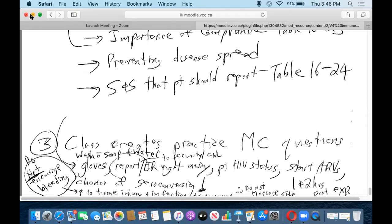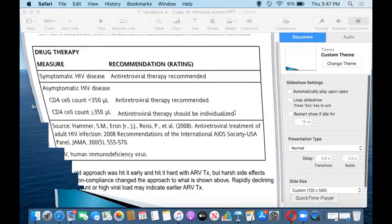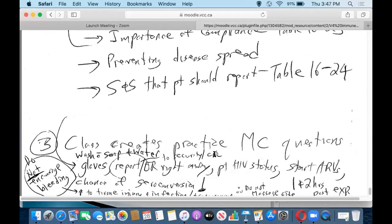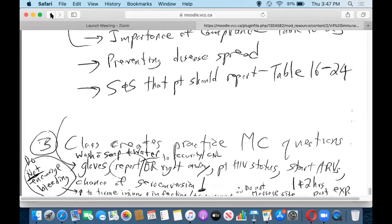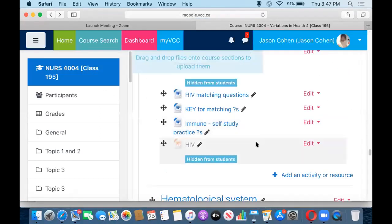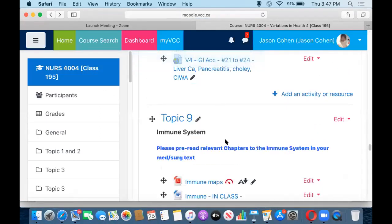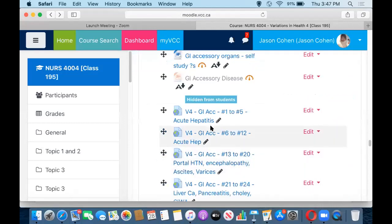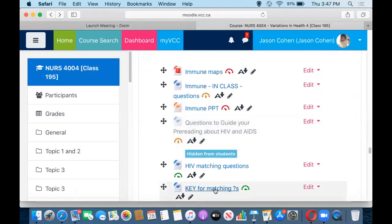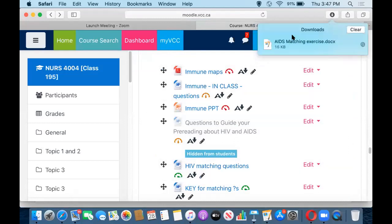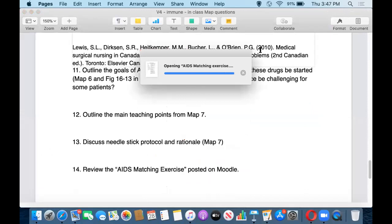And the last question on the in-class questions here, number 14, I believe it was. That's just asking you to go through the Moodle exercises and the answers are all right there for you. If you just head on down to the immune system and you have your HIV matching questions here. And then you've got the HIV matching questions key. You just go through that yourself. I would say that the main ones you want to be looking at would be, you should be able to recognize any of these in an exam. It's just basic recall here.